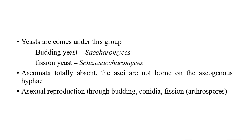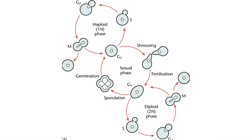Asexual reproduction is by means of budding, conidia, fission, or the formation of other spore types. Here are all the life cycle stages of yeast, that is Saccharomyces cerevisiae.